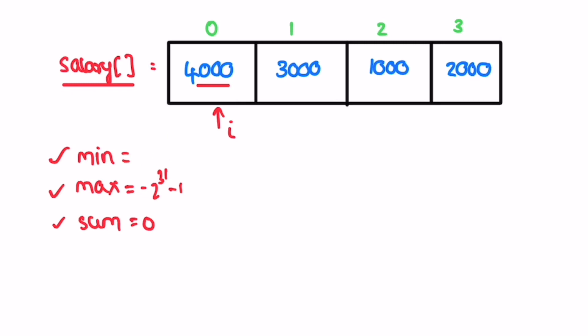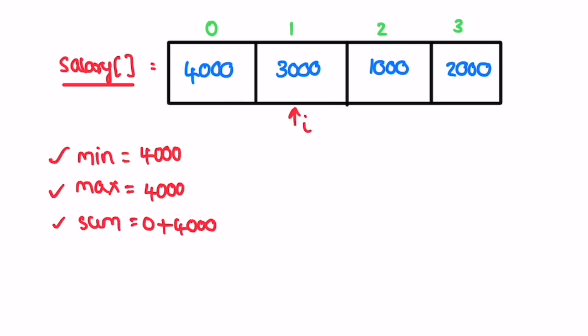Starting at index 0 (element 4000): 4000 is less than the initial max value so we update min to 4000, and 4000 is greater than the initial min value so we update max to 4000. We add 4000 to sum. Next, index 1 (element 3000): 3000 is less than 4000 so we update min to 3000. Max remains 4000. We add 3000 to sum.